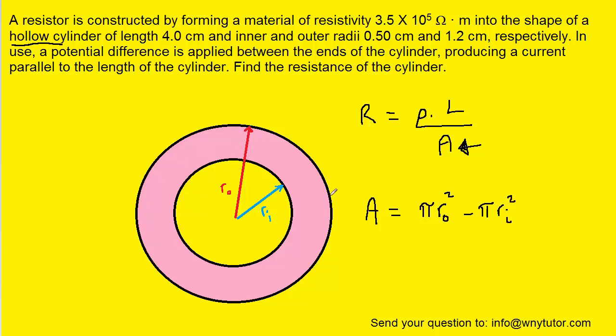And that would give the area of this pink region. Notice that because pi appears in both terms of that area formula, it can be factored out.